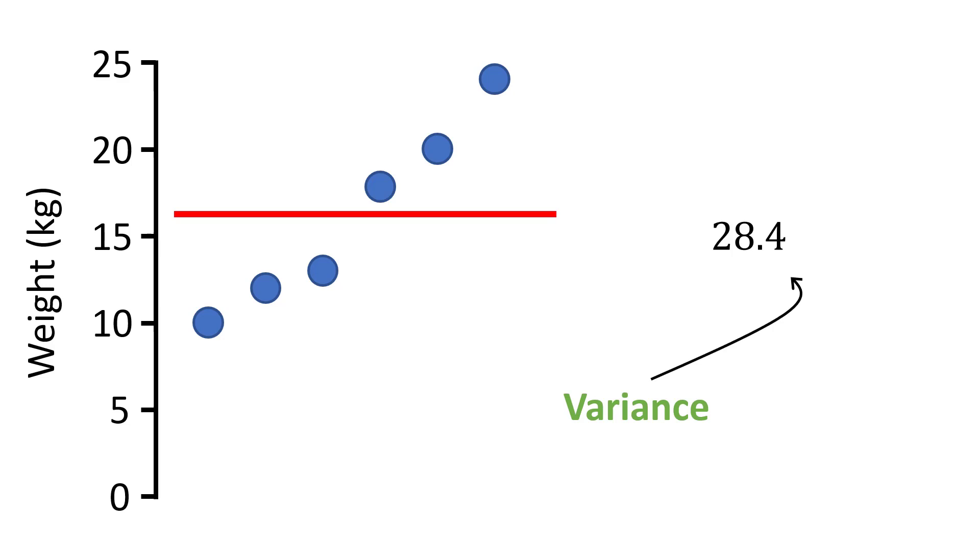Because we squared the values earlier on in the calculation it actually means the units of variance are squared. So for my example the units will be kilograms squared. And since the units of variance are squared it makes it challenging to interpret the actual value against our data, because our data are just in kilogram units.